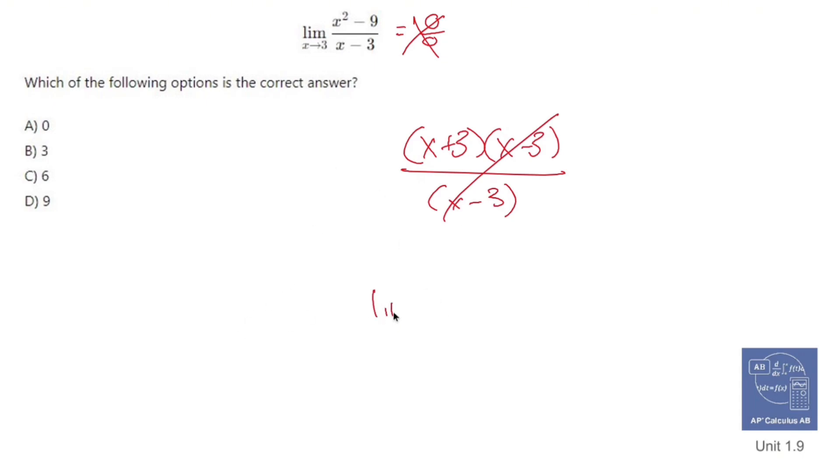So now I can just take the limit as x approaches 3 of x plus 3. Now that means I plug in 3 into the equation. When I plug in 3, I get 3 plus 3, which is 6.